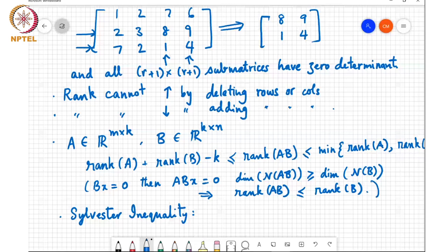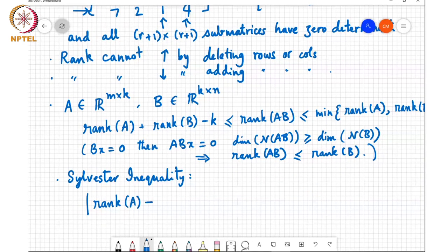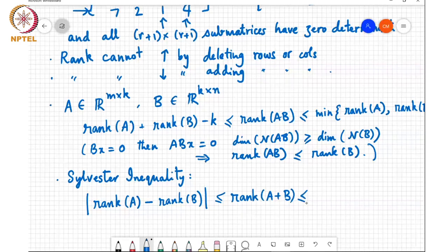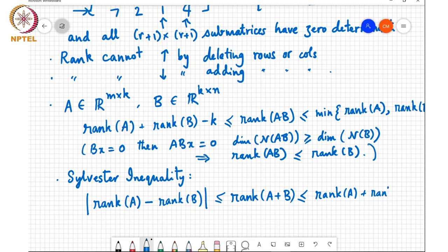It says that mod of rank A minus rank B is less than or equal to rank of A plus B, less than or equal to rank A plus rank B.